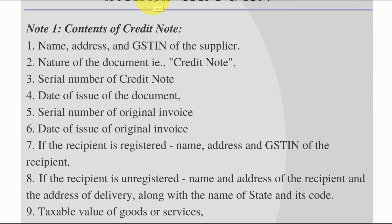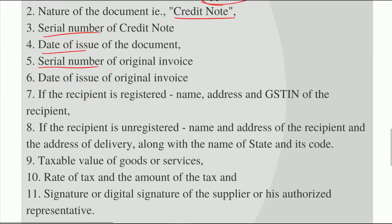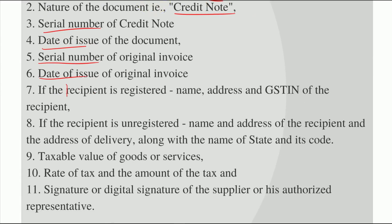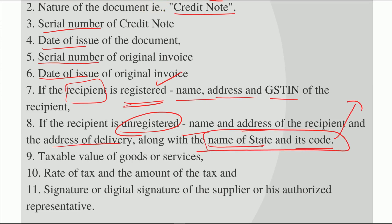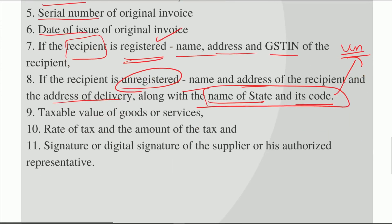What are the contents of the credit note? Supplier details must be given. At the top, you have to mention that it is a credit note. Serial number and date of issue of the document, that is the credit note. Serial number of the original invoice and date of issue of the original invoice. If your recipient is registered: the name, address and GSTIN of the recipient. If your recipient is unregistered: the name, address, and address of delivery along with the name of the state and its code. All these details are required if your recipient is unregistered. Taxable value of goods, rate of tax, and signature.